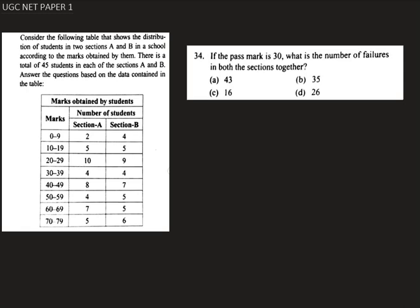Hello, here we are given one question from UGC NET Paper 1. In this question we are given a marks distribution for a number of students in two different sections named A and B, and in each section there are 45 students.